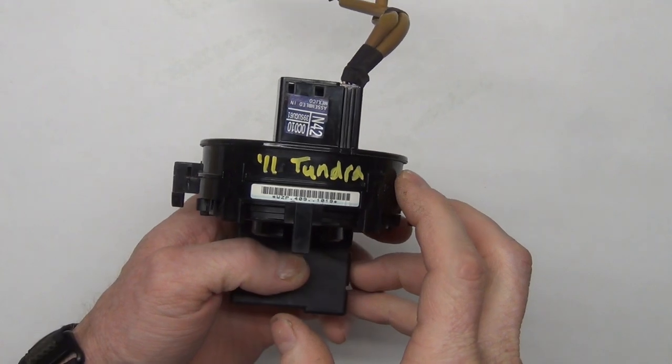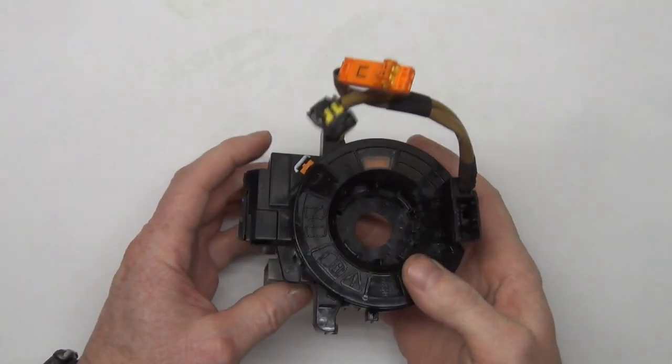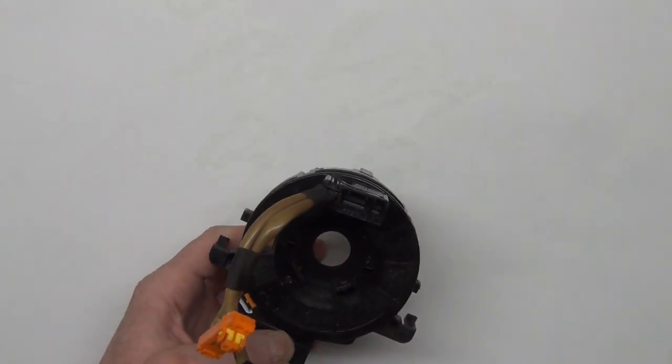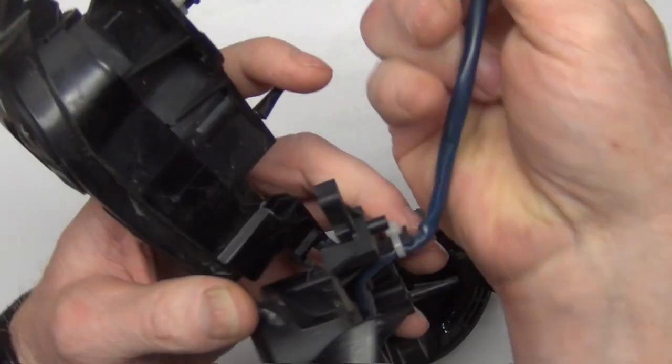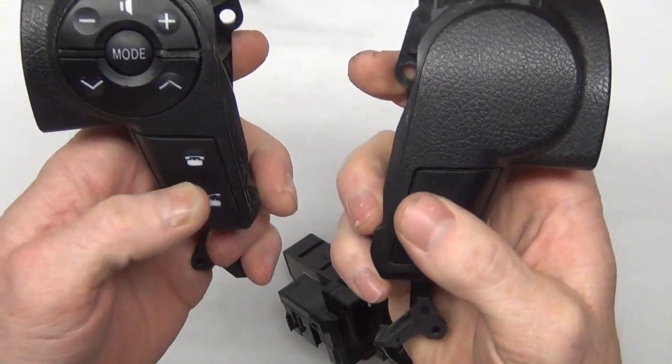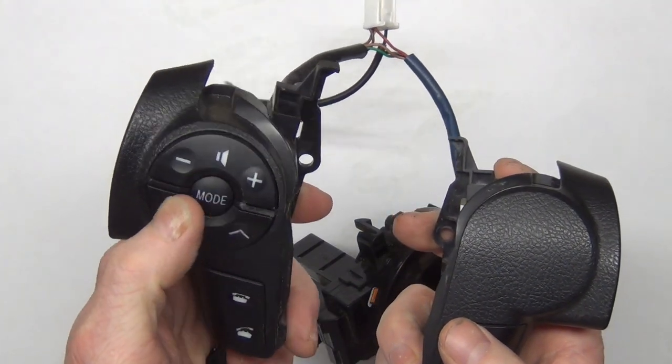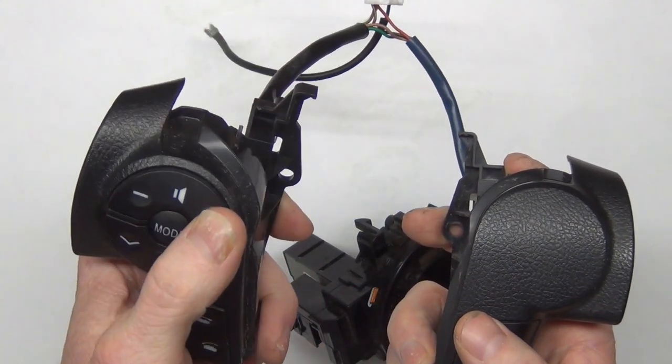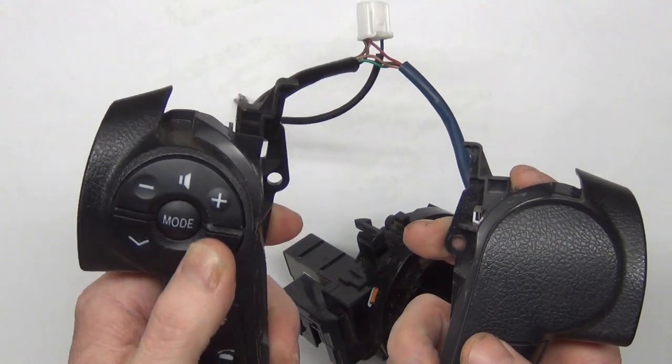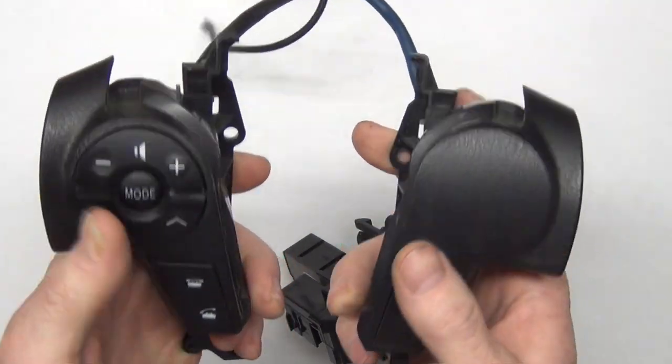This is a clock spring from a 2011 Toyota Tundra. It's what runs all the wires for all the steering wheel controls. Nowadays we have our cell phones that hook in through it. We can go through CD or radio. You can do volume up or down. You can also select the next track or radio station or whatever.